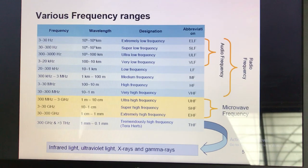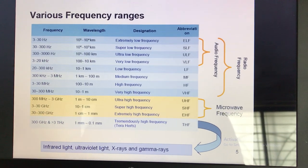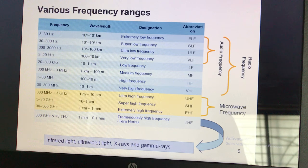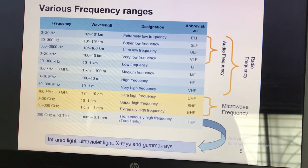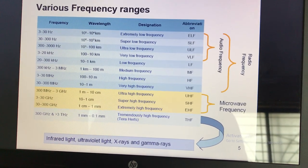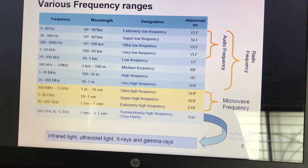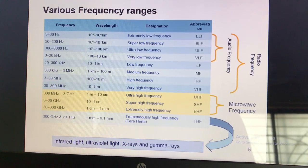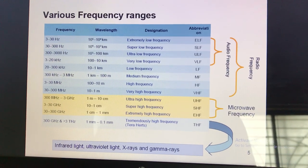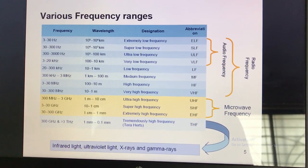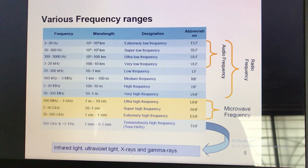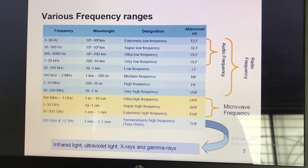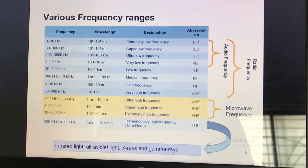These are the frequency ranges into which the spectrum is divided: Extremely Low Frequency (ELF), Super Low Frequency, Ultra Low Frequency, Very Low Frequency, Low Frequency, Medium Frequency, High Frequency, Very High Frequency, Ultra High Frequency, Super High Frequency, Extremely High Frequency, and Tremendously High Frequency.